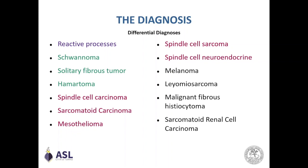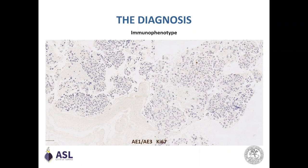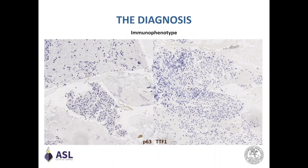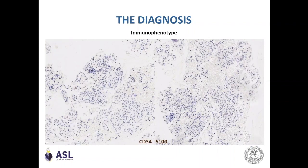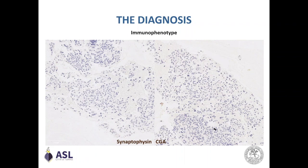We performed immunohistochemistry to differentiate between all these entities. Pan-cytokeratin was negative. Ki67 showed a low proliferation index. P63 and TTF1 were negative, allowing us to exclude squamous cell carcinoma and adenocarcinoma with spindle cell features. CD34 was negative, excluding a solitary fibrous tumor. S100 was negative, excluding a melanoma metastasis. Synaptophysin and chromogranin were both negative, excluding a neuroendocrine carcinoma or tumor.